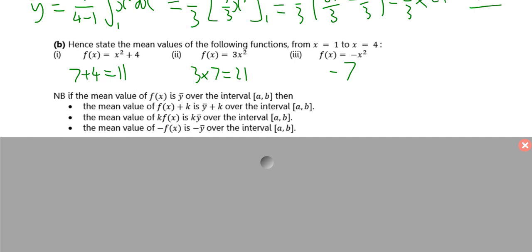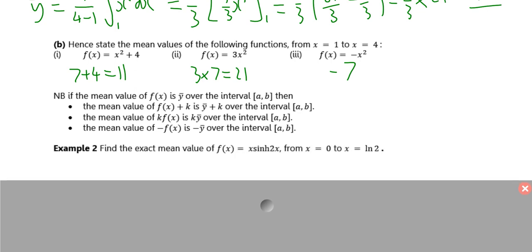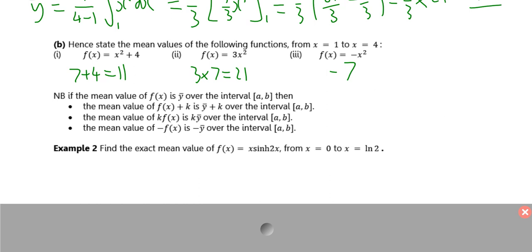These principles are illustrated here. The mean of a function, if you add on k, the mean goes up by k. If you multiply by k, the mean is multiplied by k. If you stick a minus sign in front, the mean is minus y bar.